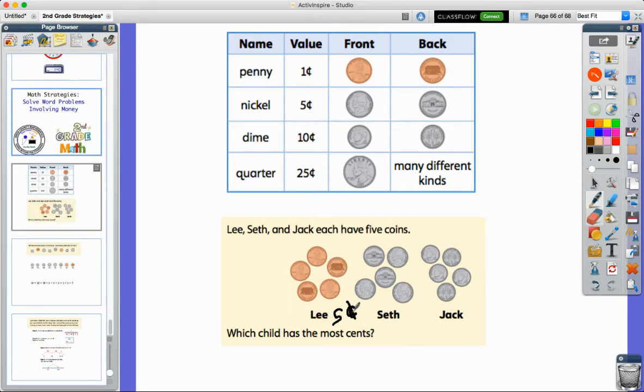Seth over here has the nickel, which is worth five cents. We can use skip counting to count Seth's money: five, ten, fifteen, twenty, twenty-five. He's got 25 cents. Could he trade his money in for something else? He's got five nickels.